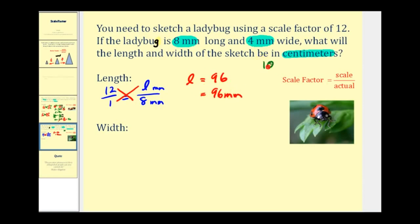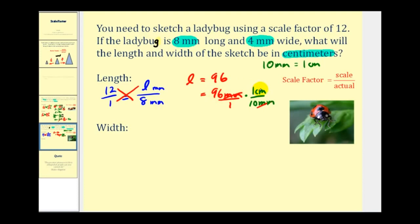Since ten millimeters equal one centimeter, we multiply ninety-six millimeters by one centimeter over ten millimeters. The millimeters simplify out, giving us ninety-six divided by ten, or nine point six centimeters.